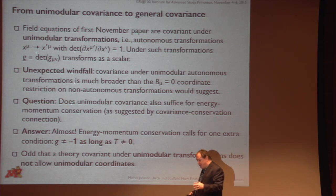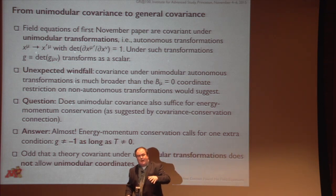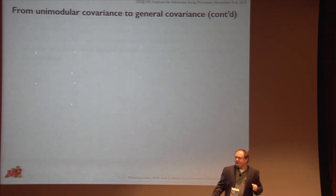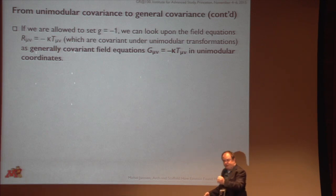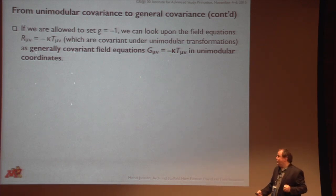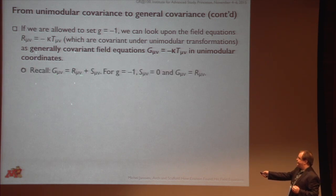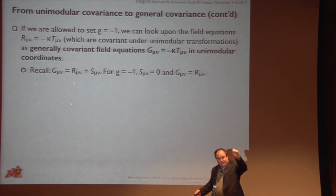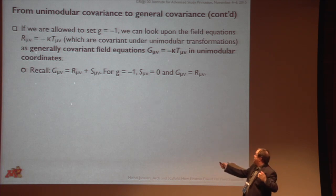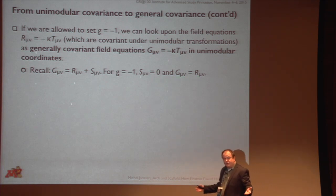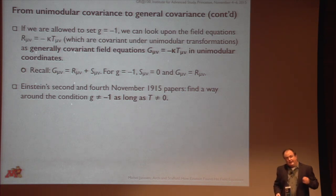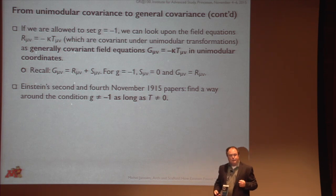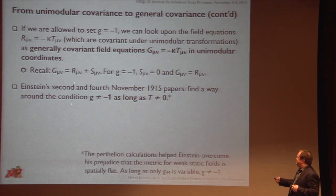Now that's a bit of an odd condition — you have a theory covariant under unimodular transformations, but you cannot write that theory in unimodular coordinates. It's worse than that, because it's very tempting to set G equal to minus one: if you do that, you can now look upon the field equations of the first November paper as generally covariant field equations in special coordinates. Remember, the Ricci tensor is just the sum of two parts, R mu nu and S mu nu. If G equals minus one, S mu nu — constructed starting from the derivative of the log of the square root of minus G — is going to be zero. So all you're left with is R mu nu, and you can say: we have generally covariant field equations, written in unimodular coordinates. So what you can see in Einstein's second and fourth November papers is attempts to get around that annoying condition that you cannot set G equals minus one.